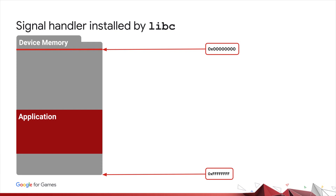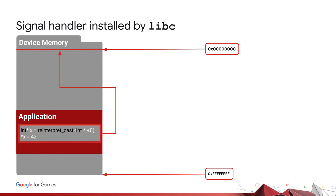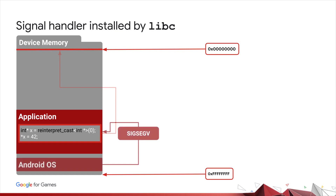Here we have an app whose address space falls somewhere between zero and a bunch of f's. This app has a bug — a very common bug. It's trying to write a value into the memory address zero, which happens to fall outside of the app's address space. The operating system is not so cool with this, and it tells the app by sending it a POSIX signal.